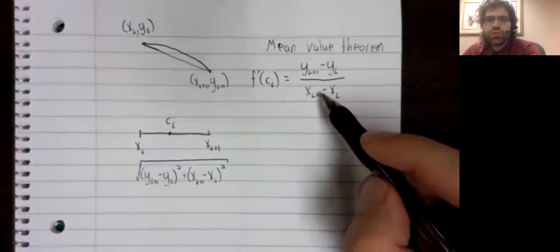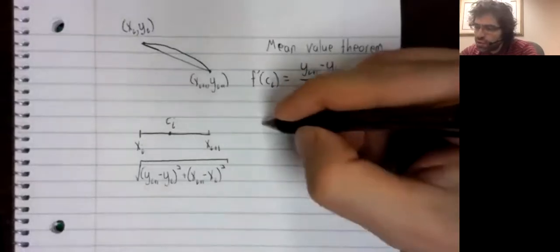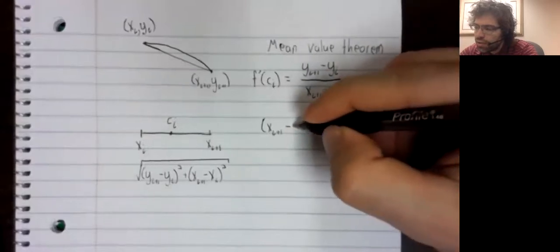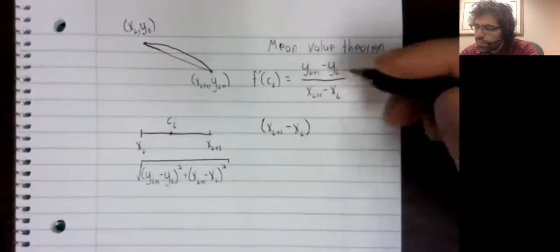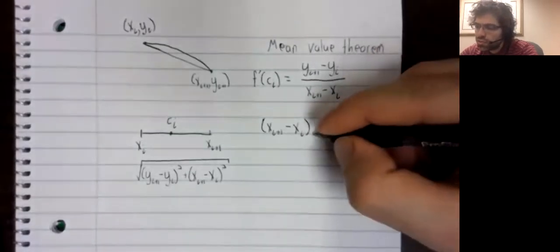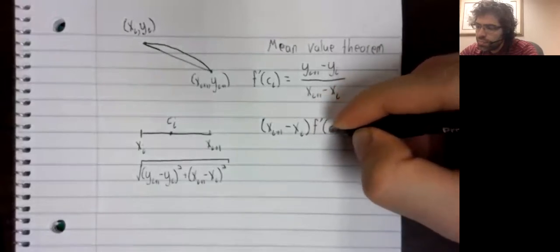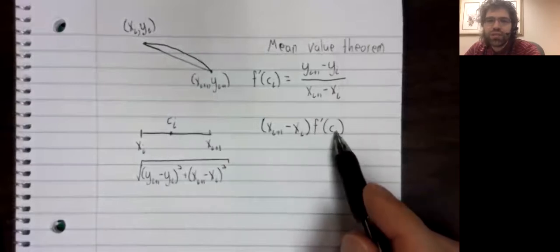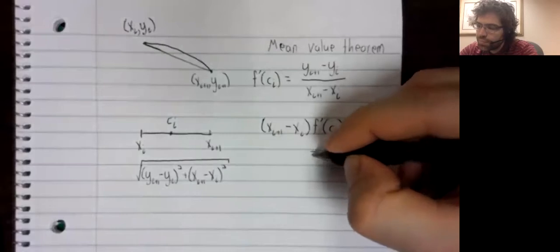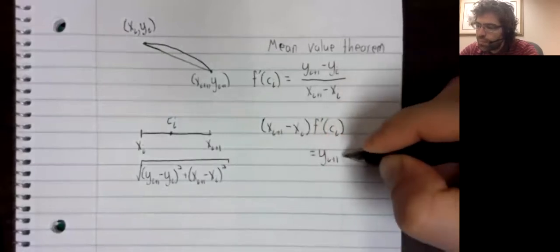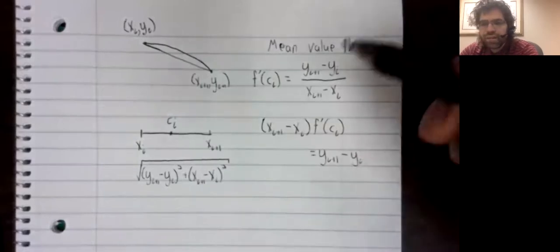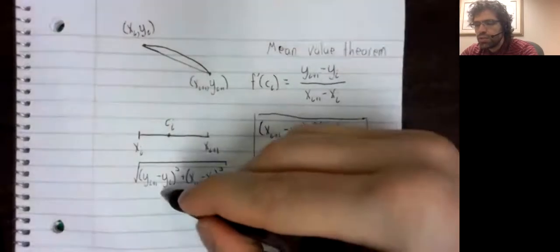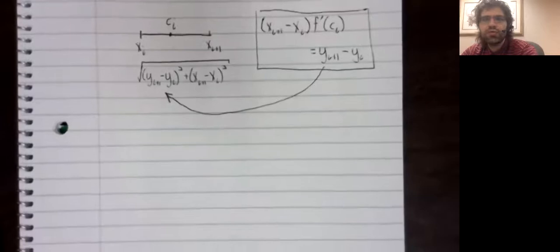And what we're going to do is we're going to rewrite this so that we have this difference written in terms of this difference and the derivative. And then we are going to take this and we are going to plug it into that approximation.